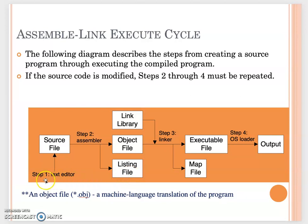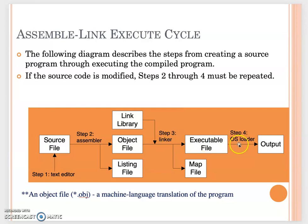Every time your source file is updated, all the steps from step 2, 3, and 4 will be repeated. If your source file is modified, when you run the IDE, it knows the source file was modified, so it will reassemble, run the linker again, then load the execution file and get the output. But if the IDE sees the source code has not been modified, it just uses the old execution file to run.